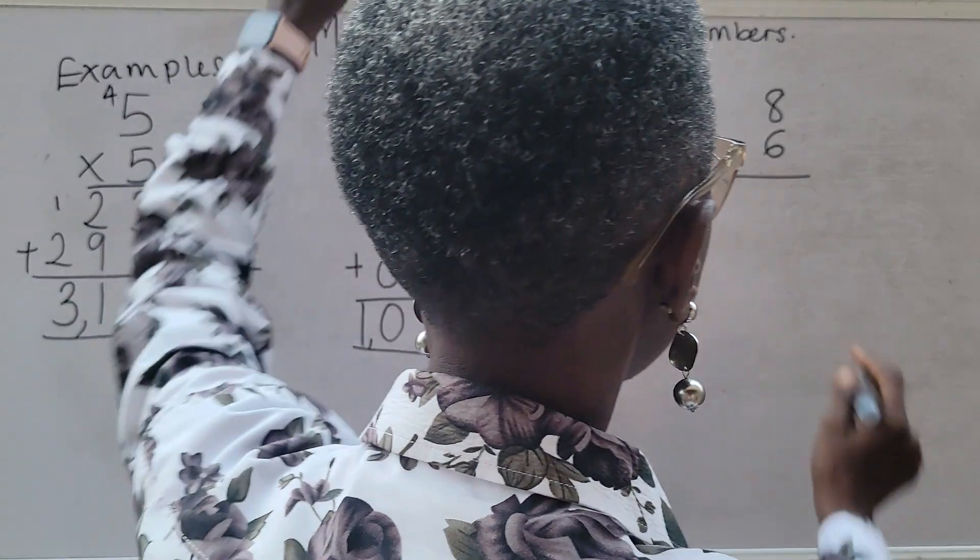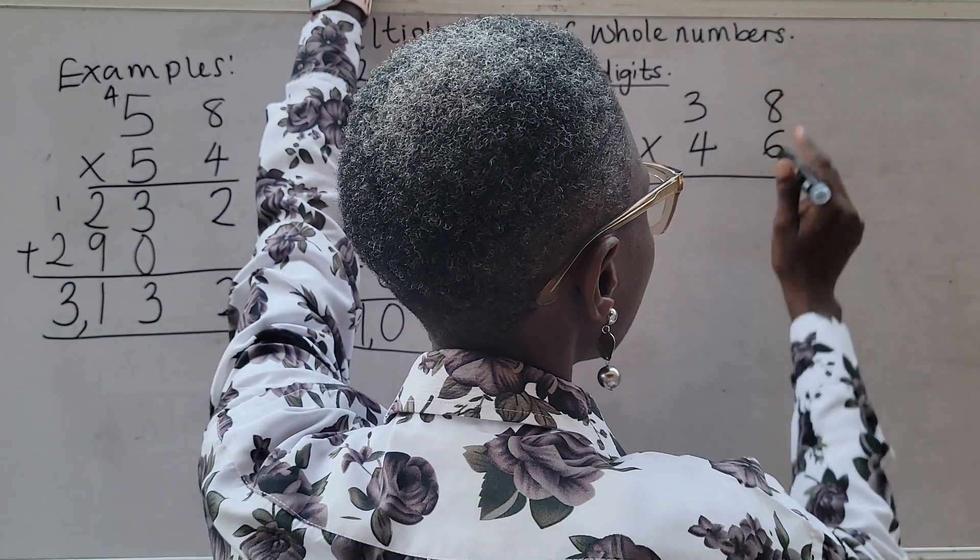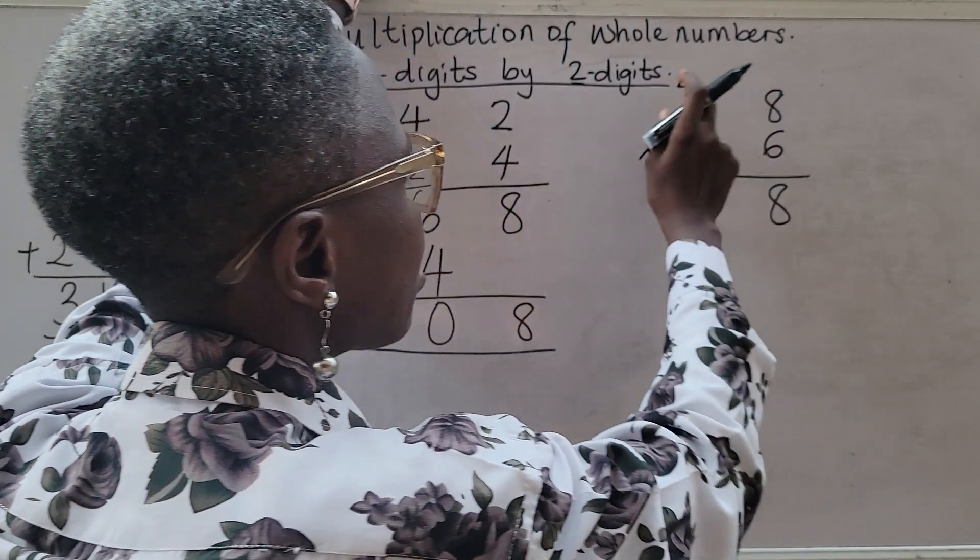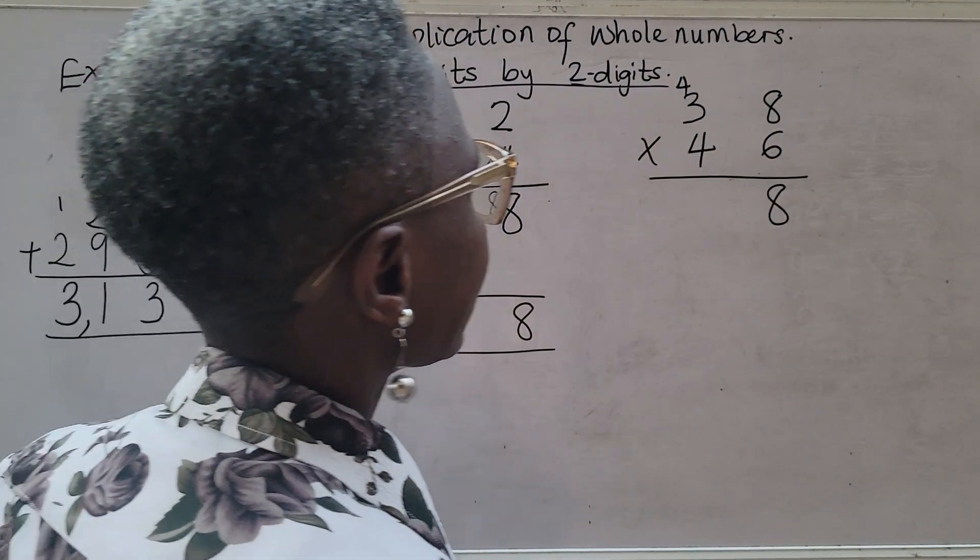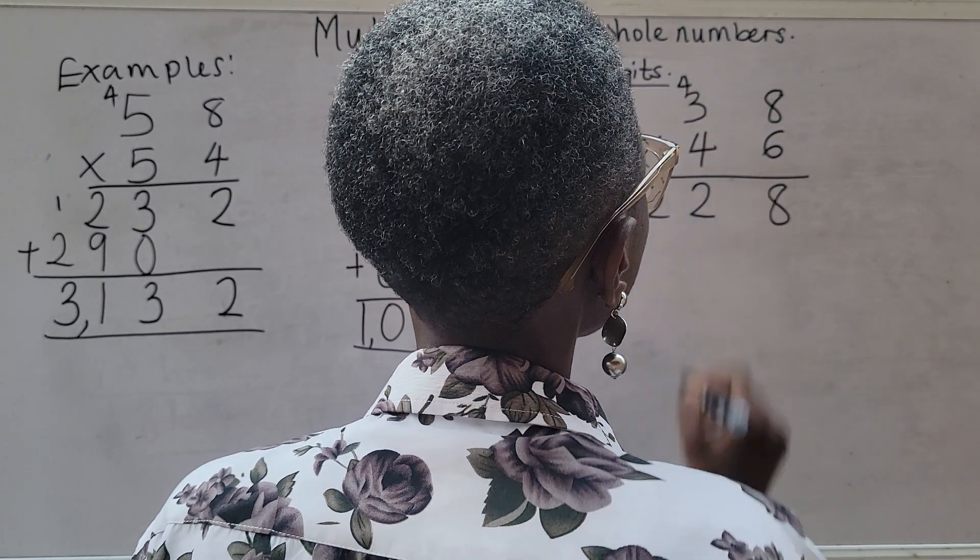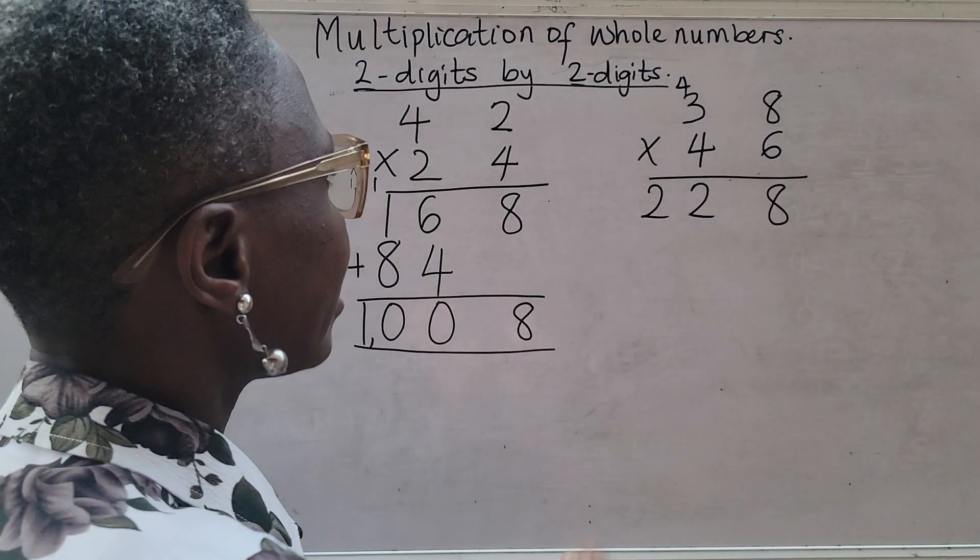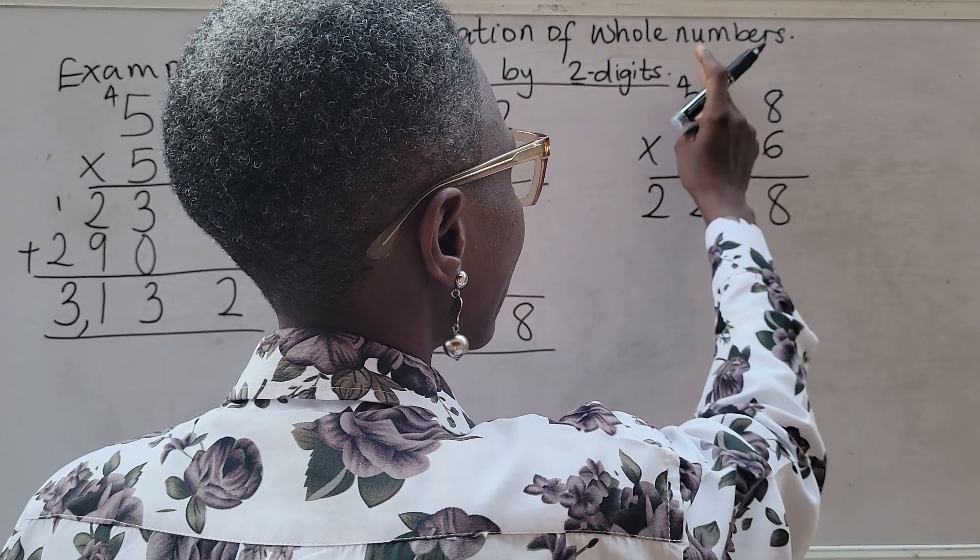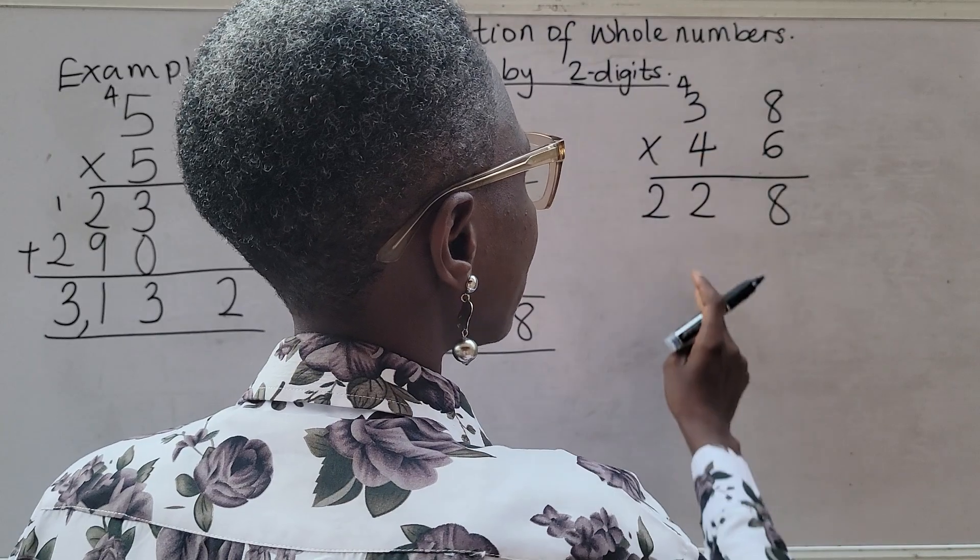The last but not the least question is this. Six times eight is 48. You have your four. Six times three is 18. 18 plus four is 22. Then you are multiplying by four.